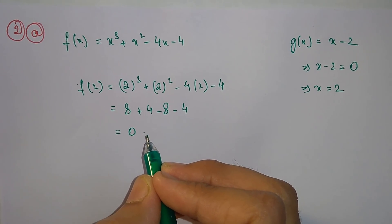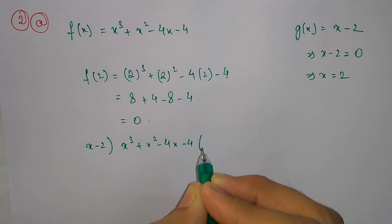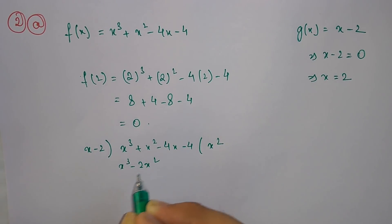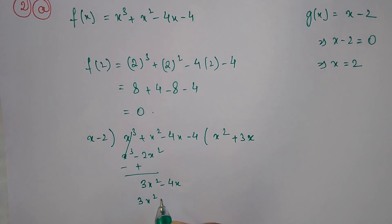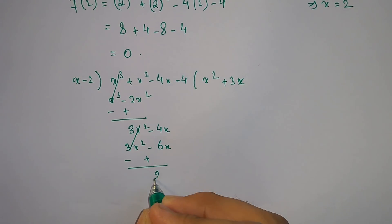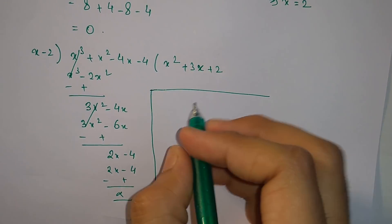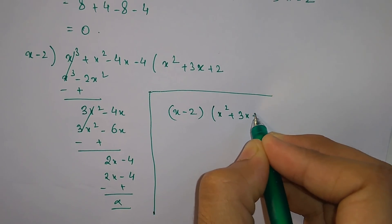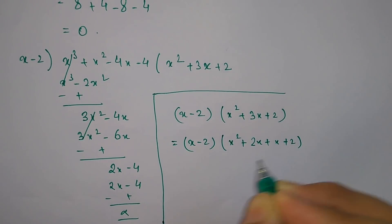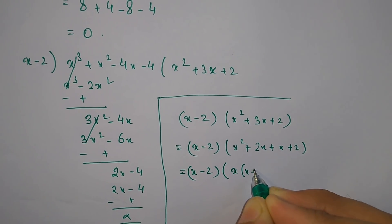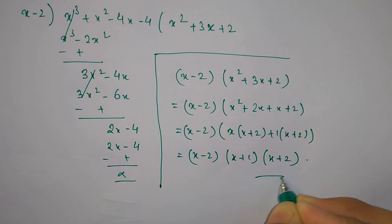Now we factorize the polynomial completely by dividing x³ plus x² minus 4x minus 4 by (x minus 2). The division gives (x minus 2) into (x² plus 3x plus 2). Factorizing by middle term: x² plus 2x plus x plus 2, which gives (x plus 2)(x plus 1). So the complete factorization is (x minus 2)(x plus 1)(x plus 2).